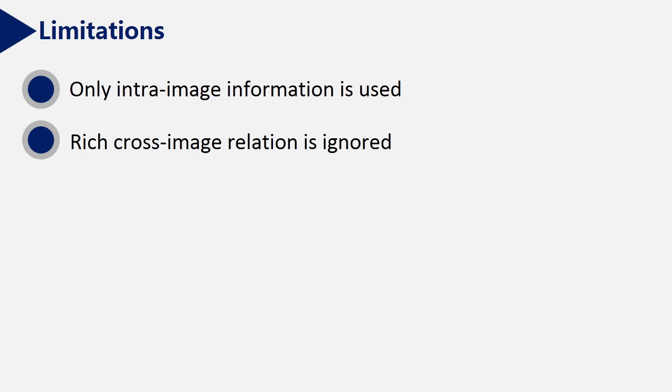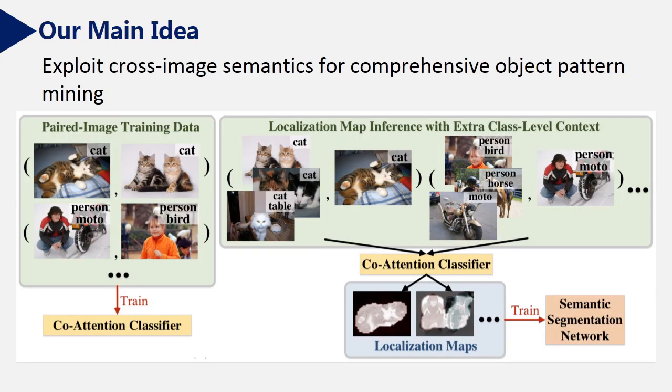Our key idea is to use cross-image semantics for comprehensive object pattern mining. As shown in the left of this slide, different from previous methods which only use single image, we use paired images to train our co-attention classifier, which will be introduced in the following presentation.